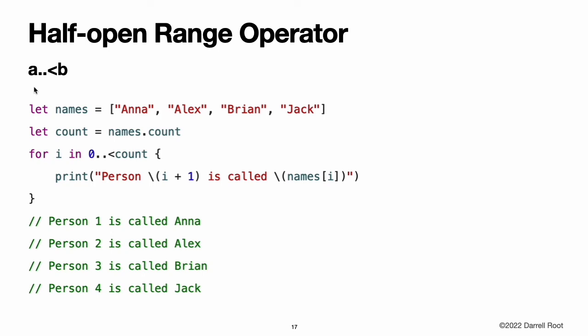The half-open range operator, a..<b, defines a range that runs from a to b but does not include b. It is said to be half-open because it contains the first value but not its final value. The value of a must not be greater than b; if equal, the resulting range will be empty. Half-open ranges are particularly useful when you work with zero-based lists such as arrays, where it is useful to count up to but not including the length of the list. Note that the array contains four items, but 0..<count only counts as far as three, which is the index of the last item. For more about arrays, see Arrays.